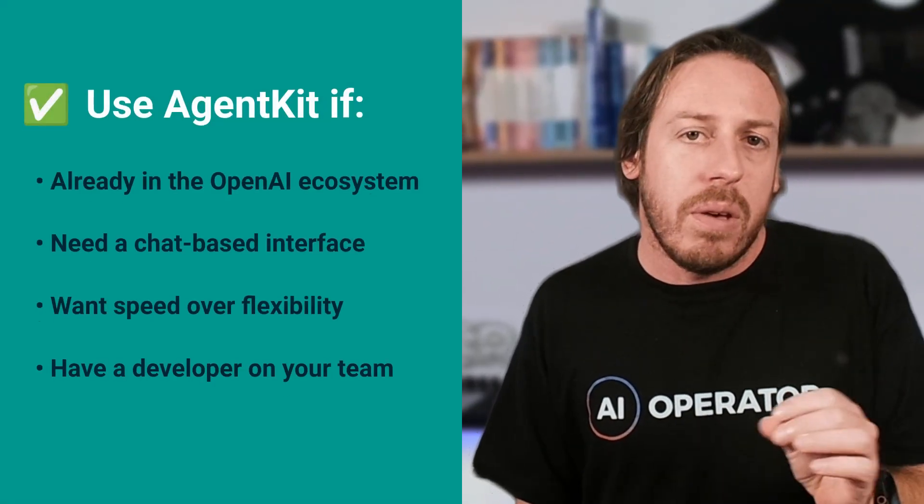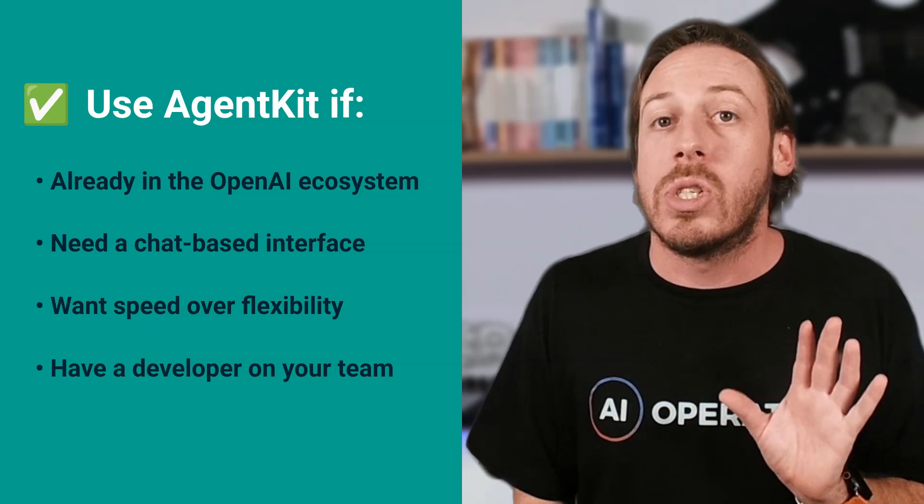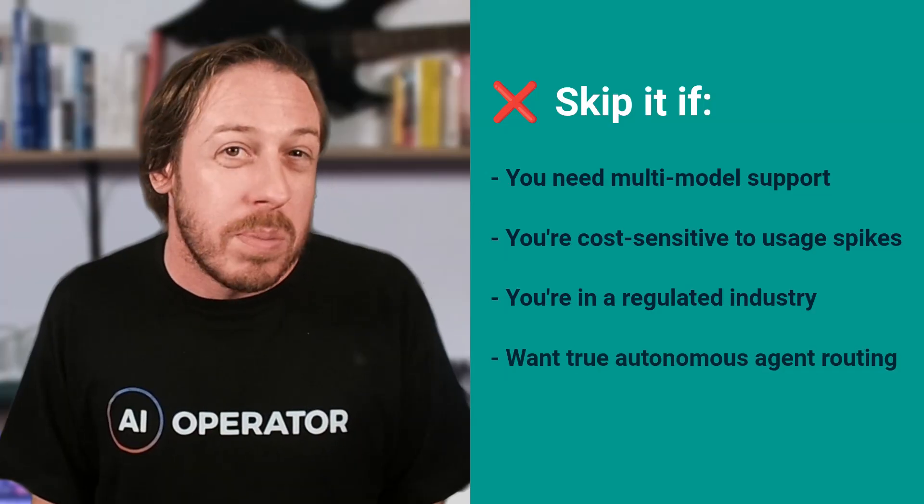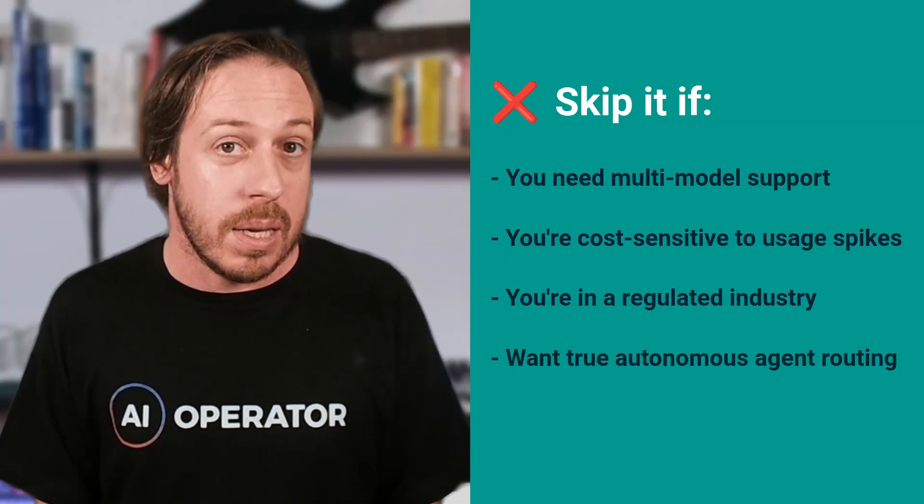OpenAI Agent Kit is legit. It's not perfect, but it's the fastest way to go from idea to deployed AI agent right now — especially for custom support, research assistance, sales assistance, or internal tools. Use Agent Kit if you're already in the OpenAI ecosystem, you need a chat-based interface, you want speed over flexibility, and you have a developer on your team. Skip it if you need multi-model support, you're cost-sensitive to usage spikes, you're in a regulated industry, or you want true autonomous agent routing. My recommendation: build a simple agent — customer FAQ bot, document Q&A — see if the workflow clicks. If you hit the limits, pivot to N8N. If you love it, go all in.